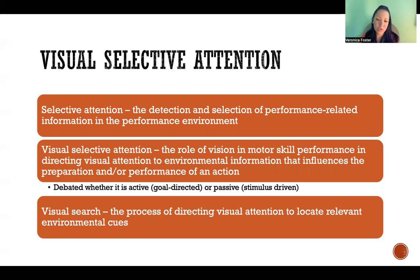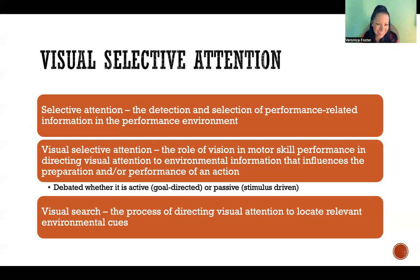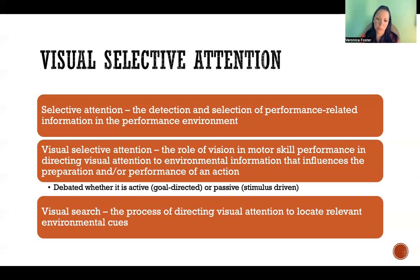Visual search is the process of directing visual attention to locate relevant environmental cues. We are visually searching the environment and looking for environmental cues — like seeing somebody stealing a base, the ball coming toward you, or an opponent coming to tackle you. It depends on the sport or skill, but we're in the process of scanning the environment to find the thing we should be paying selective attention to.